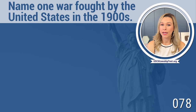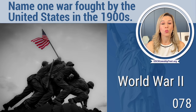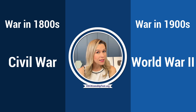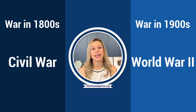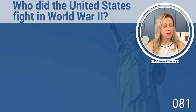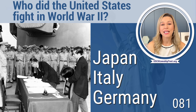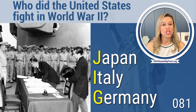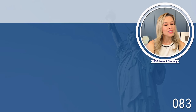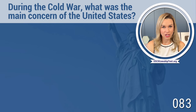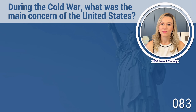Name one war fought by the United States in the 1900s. World War II — remember, the Civil War was in the 1800s, and in the 1900s you can answer World War II. Who did the United States fight in World War II? Japan, Italy, and Germany. How I remember that is the acronym JIG — J for Japan, I for Italy, G for Germany. During the Cold War, what was the main concern of the United States? Communism.